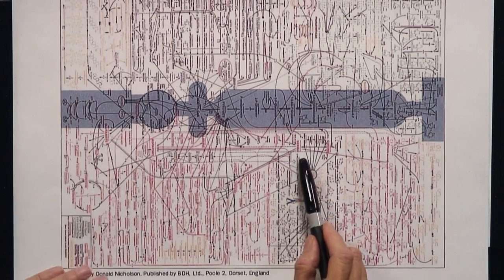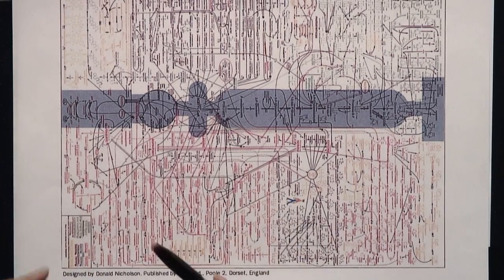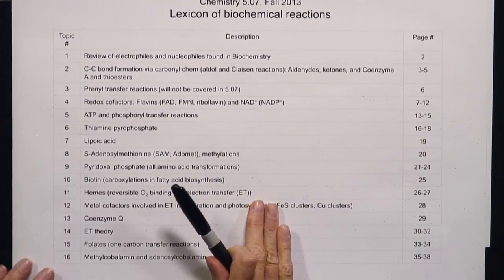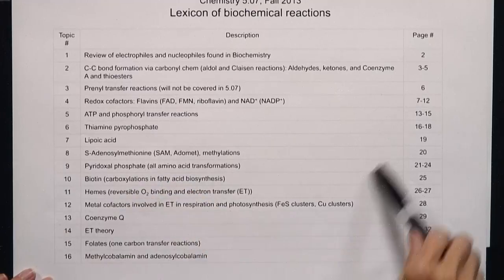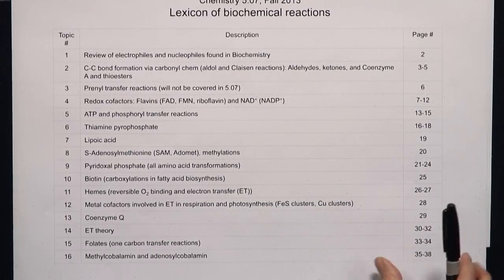How are you ever going to learn anything out of this mess? Well, that's actually exactly the point. What we're going to do over the course of this semester is convince you that all of this mess can be simplified to 10 basic reactions. And those 10 basic reactions are what's in the lexicon. It turns out all of biochemistry for primary metabolism can be described using 10 different sets of reactions and your vitamin bottle.